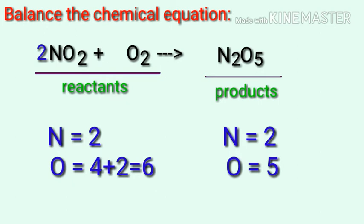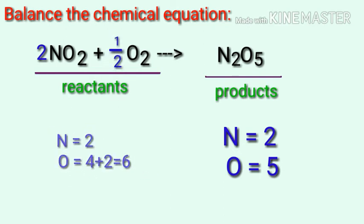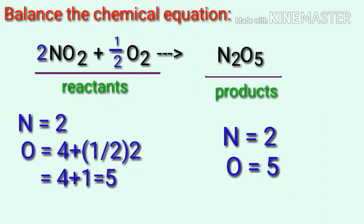To do this we need to put a coefficient of one by two in front of O2. The oxygen atoms are balanced now. You can multiply the equation by a coefficient of two on both sides.